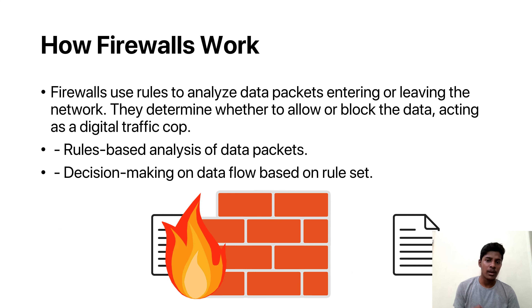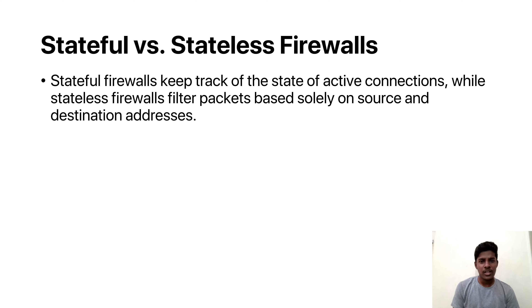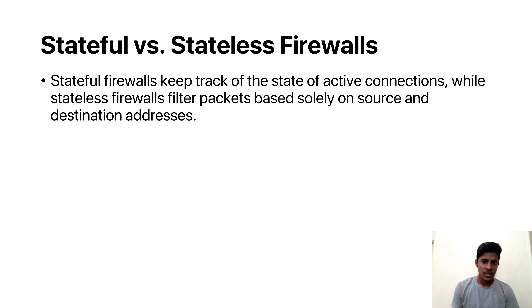Firewalls often log information about the traffic they process. Firewalls can also be classified as stateful or stateless. Stateful firewalls keep track of the state of active connections, while stateless firewalls filter packets based solely on source and destination addresses. Stateful firewalls not only consider source and destination address, but also monitor the state of active connections, allowing them to make more informed decisions by considering the context of the data flow. In contrast, stateless firewalls make decisions solely based on source and destination addresses without considering the state of the connection.